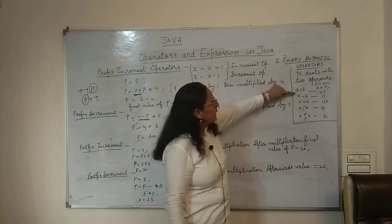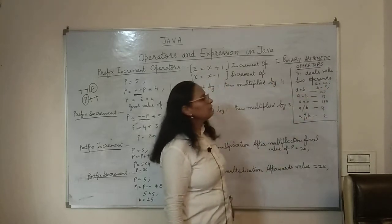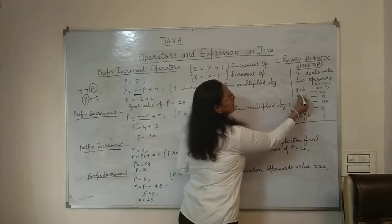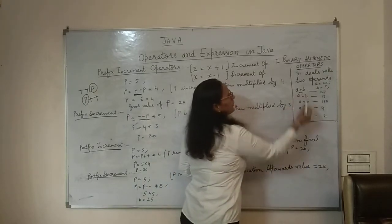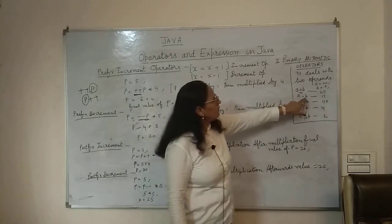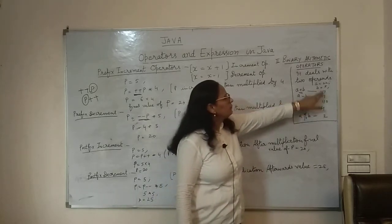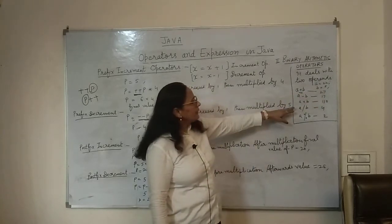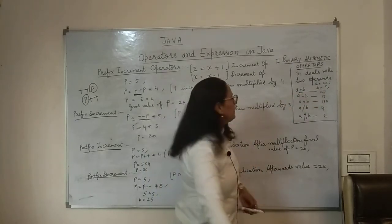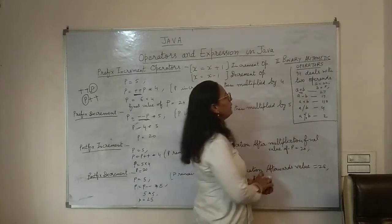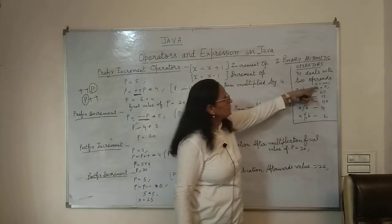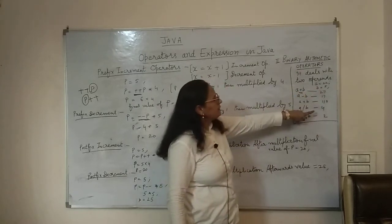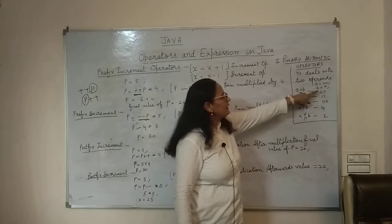With A = 22 and B = 5: A + B will be 27 — this is the binary arithmetic addition operator. A - B will be 17, because 22 minus 5 is 17. Then A * B will be 110, as 22 multiplied by 5 equals 110.